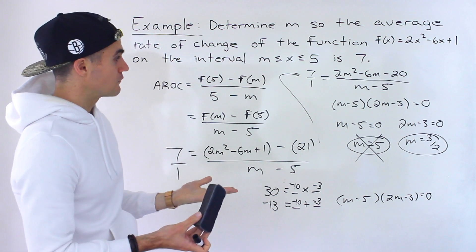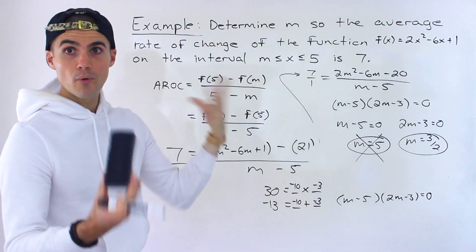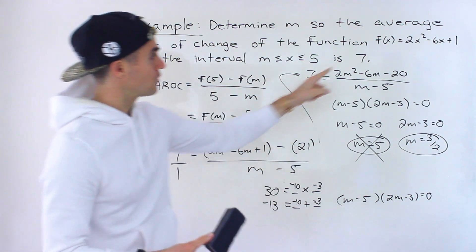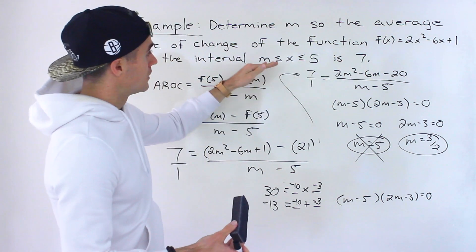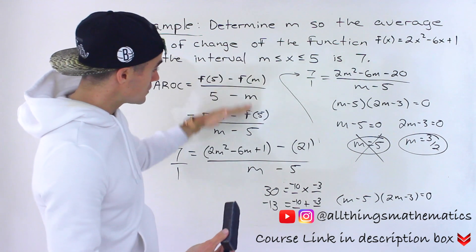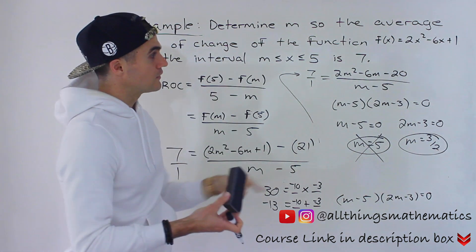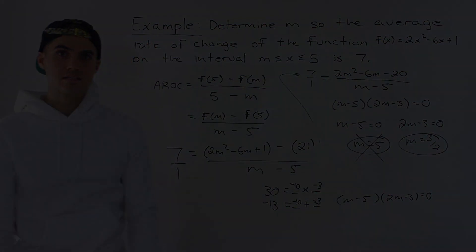And then if you want, if you have the time, you could check it. So you could pretend like you just got a regular average rate of change question for this function, where x is between 3/2 and 5. And then you can do this whole process with f(5), f(3/2). And then your final answer should be 7.